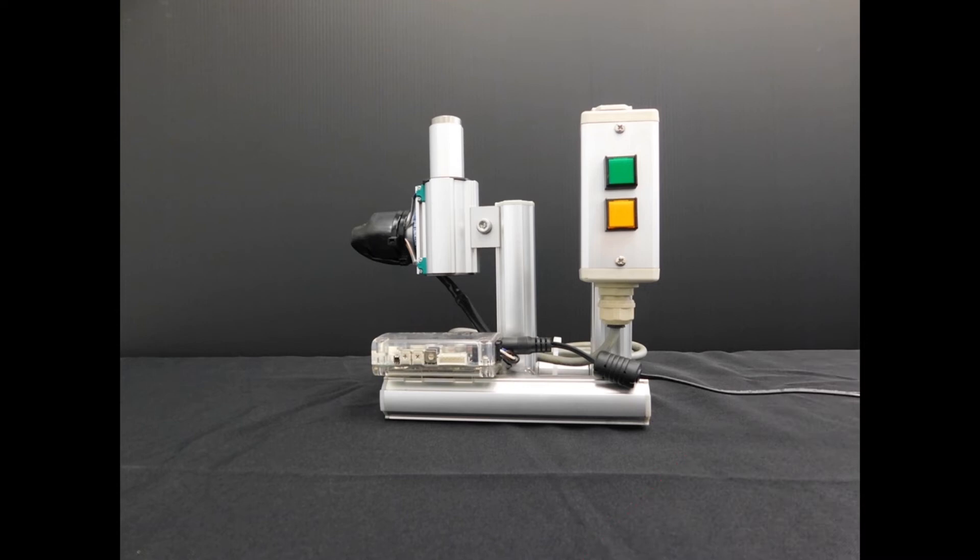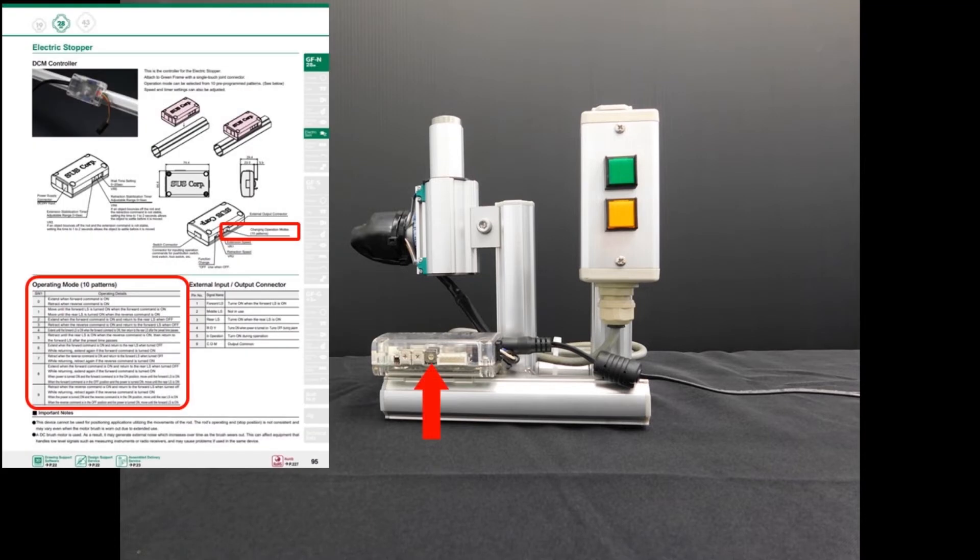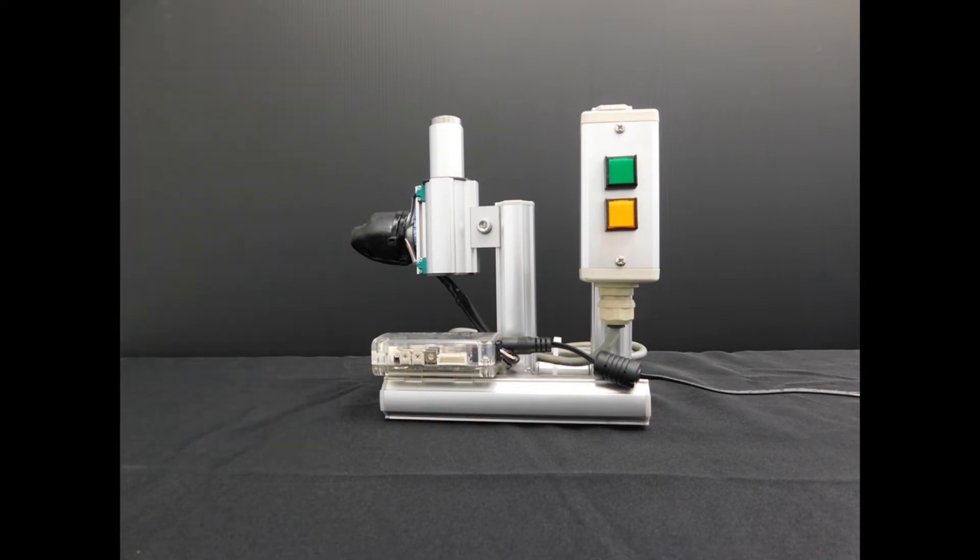The electric stopper is a simple way to immediately improve control on any flow rack. The stopper is pre-programmed with 10 different operating modes as well as speed controls. Let's take a look at the most popular settings.